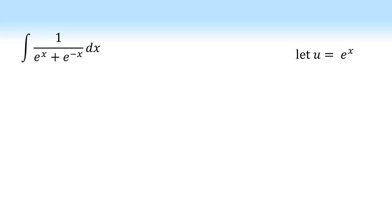So let's have a go at that. We're going to let u equal e to the x. Differentiating this gives us du by dx is equal to e to the x. We're going to rearrange this now so it's in the form dx equals. So dx equals e to the minus x du.